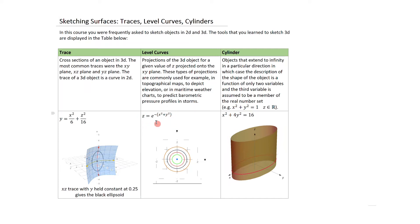For a Gaussian function, you take a specific value of Z and plot Y as a function of X, then change Z and plot again. This produces a series of circles of specific radii corresponding to different values of Z. If Z is varied in equidistant steps, the spacing between circles — whether similar, compressed, or spread out — tells you something about the rate of change.